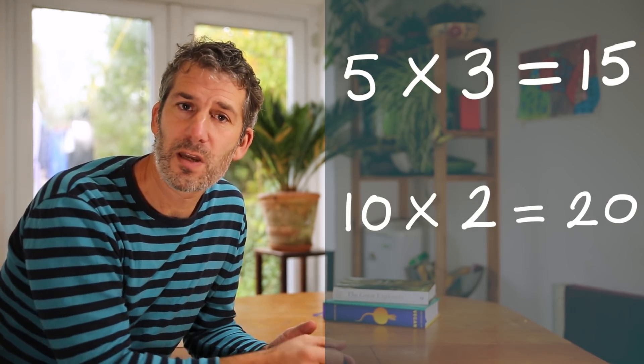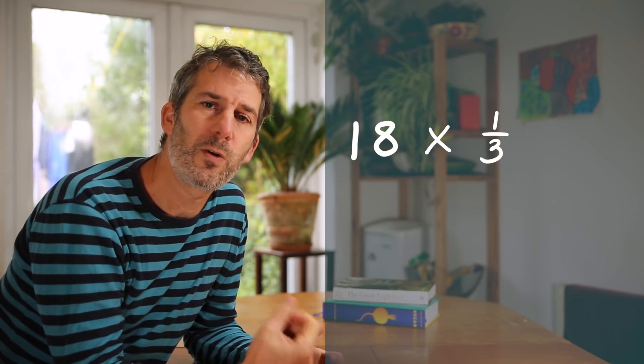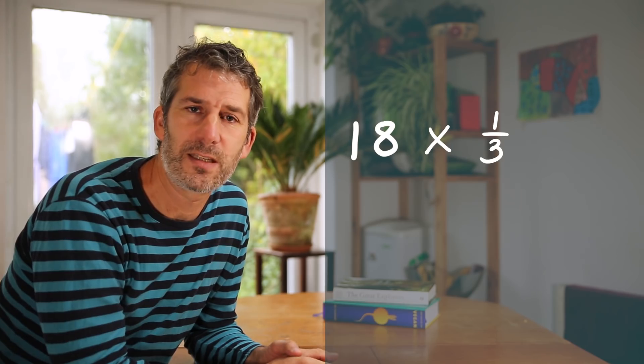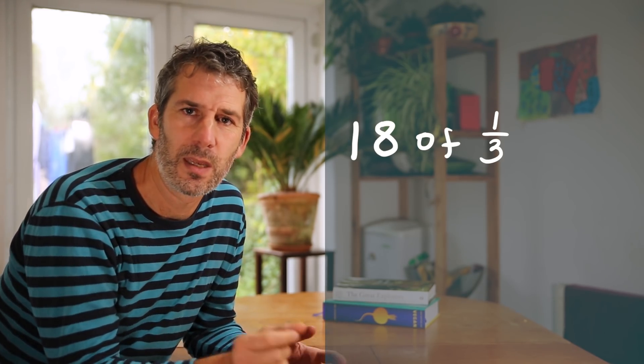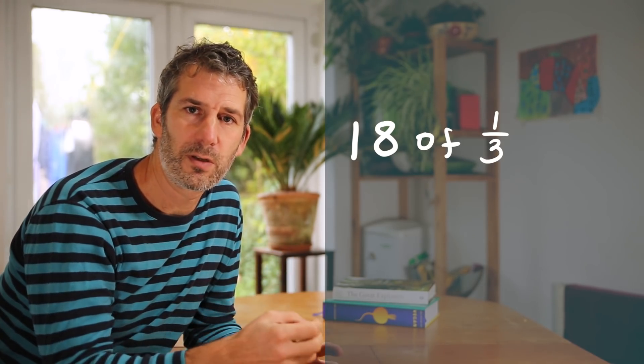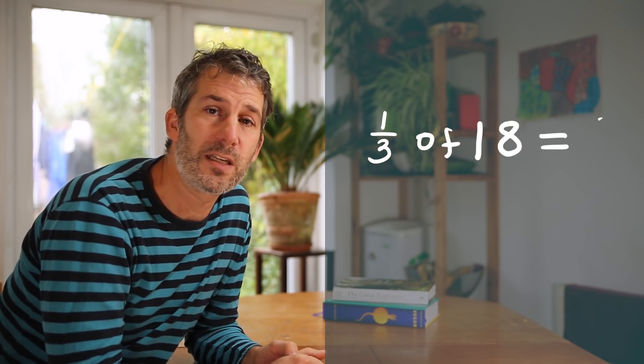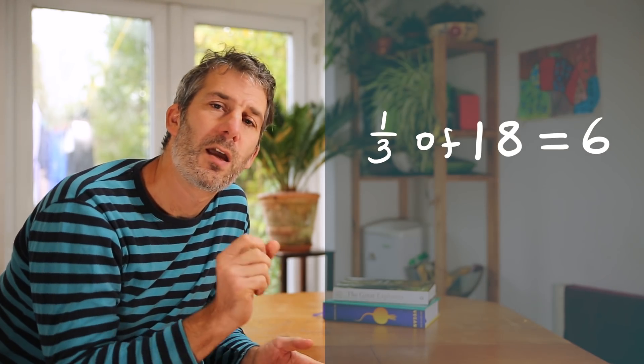So if for example you had something like 18 times a third, well we know that we can think of it as 18 of a third. But that doesn't really make much sense. If we swap the two numbers around we now have a third of 18. And we know that to find a third of something you divide by 3. So a third of 18 is 6.